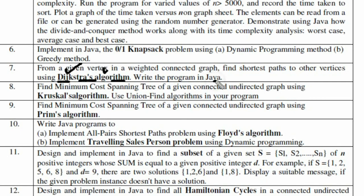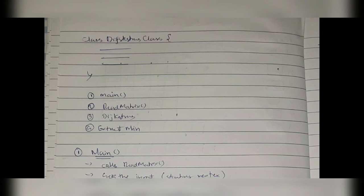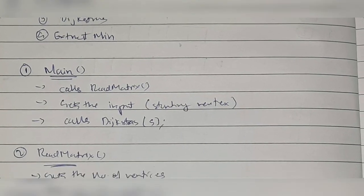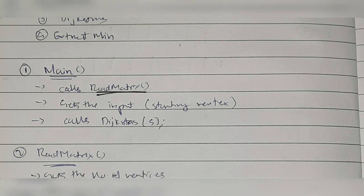Let's discuss the program outline for Dijkstra's algorithm. The class we'll be using is the Dijkstra's class, and inside that we'll have four things: the first is the main function, the second is readMatrix, the third is the Dijkstra's algorithm function, and the fourth is extractMinimum.